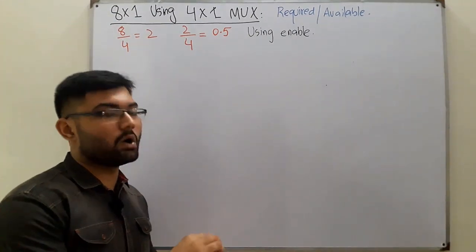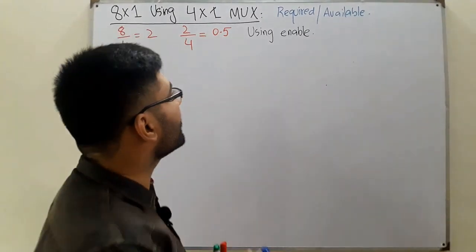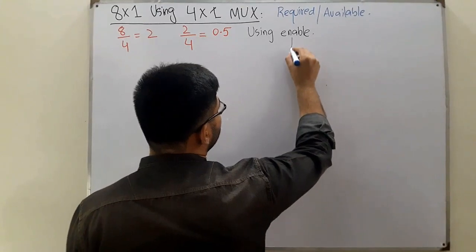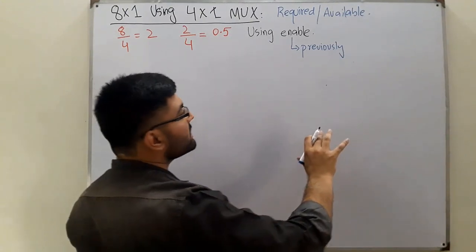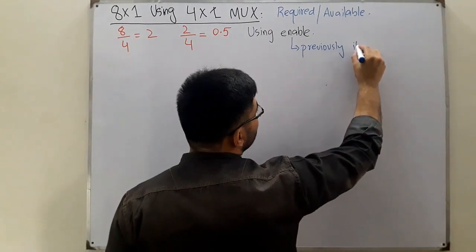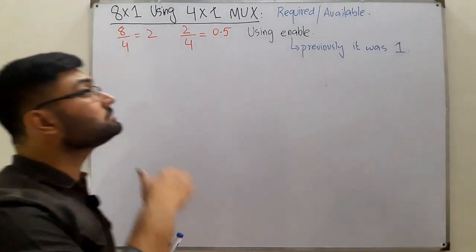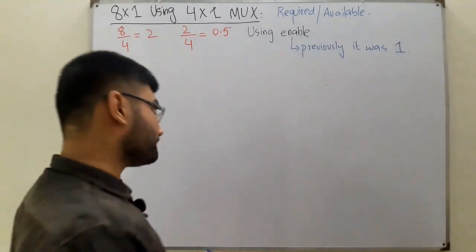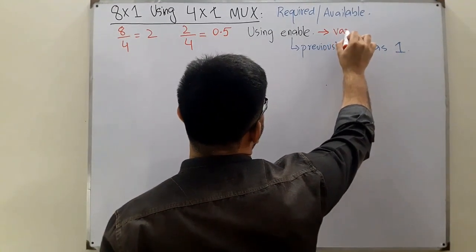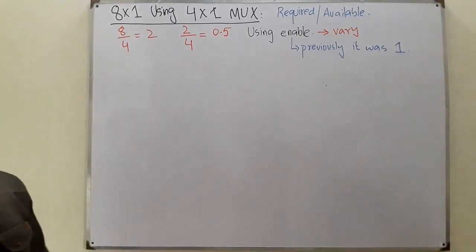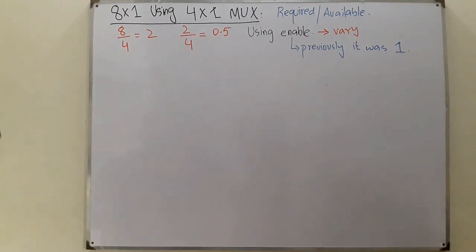Using enable: you know what the enable is — when it's one the multiplexer is on; if it's not one the multiplexer circuitry is not working. Previously when we weren't using it in the tree examples it was considered as one, meaning the MUX was always working. In this case we have a fractional result, so we vary the enable to turn the multiplexer on and off.